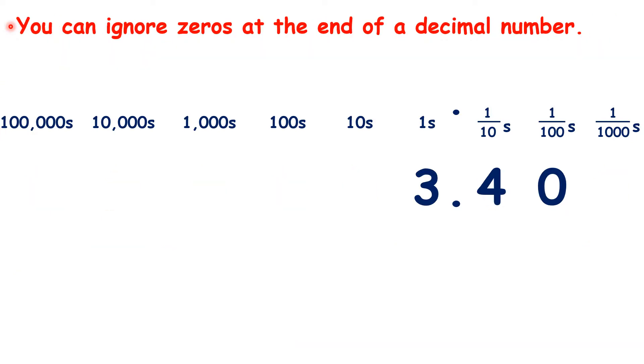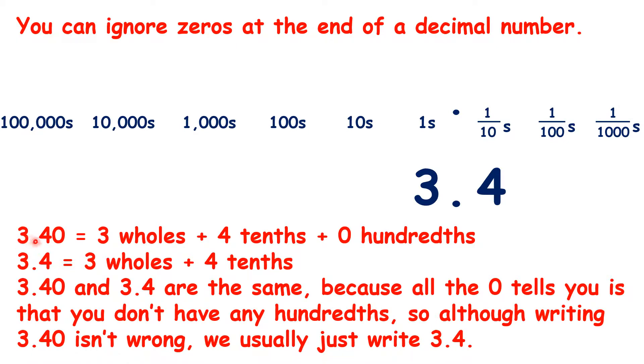You can ignore zeros at the end of a decimal number. So if you see the number 3.40, you can just write the number 3.4. That's because 3.40 tells you that you have 3 wholes, 4 tenths, and no hundredths, and 3.4 tells you that you have 3 wholes and 4 tenths. So 3.40 and 3.4 are the same, because all the zero tells you is that you don't have any hundredths. So although writing 3.40 isn't wrong, we usually would just write 3.4.